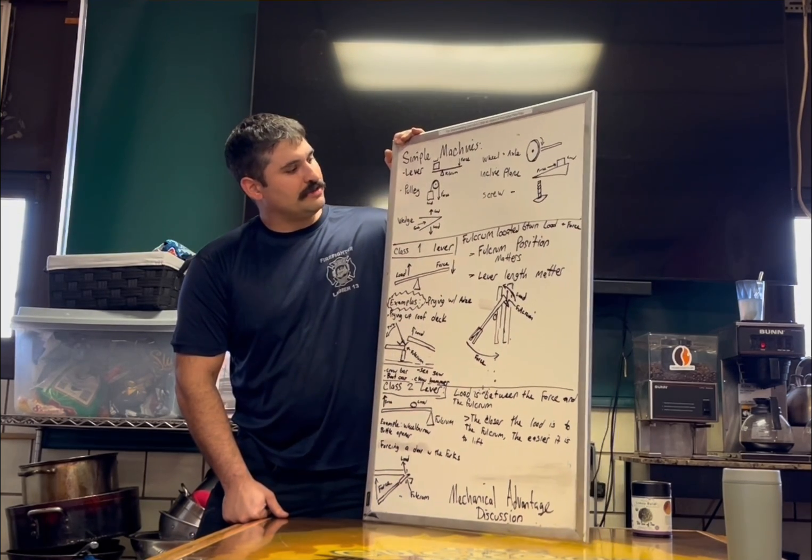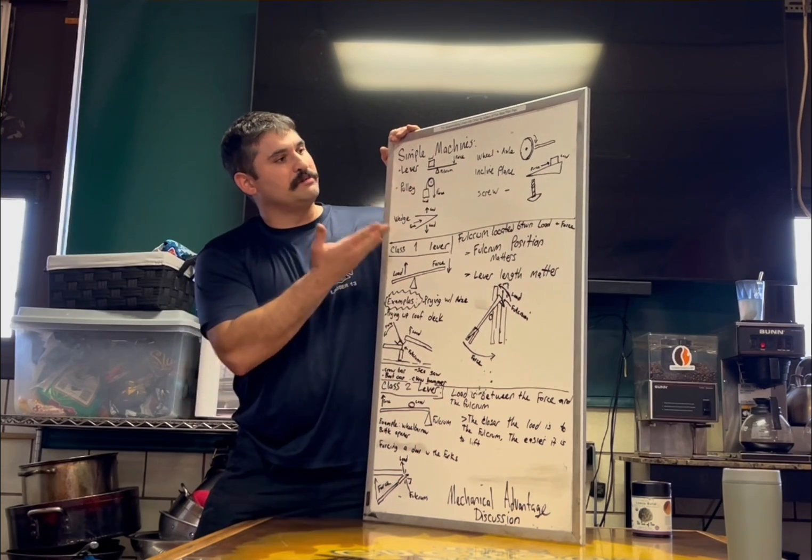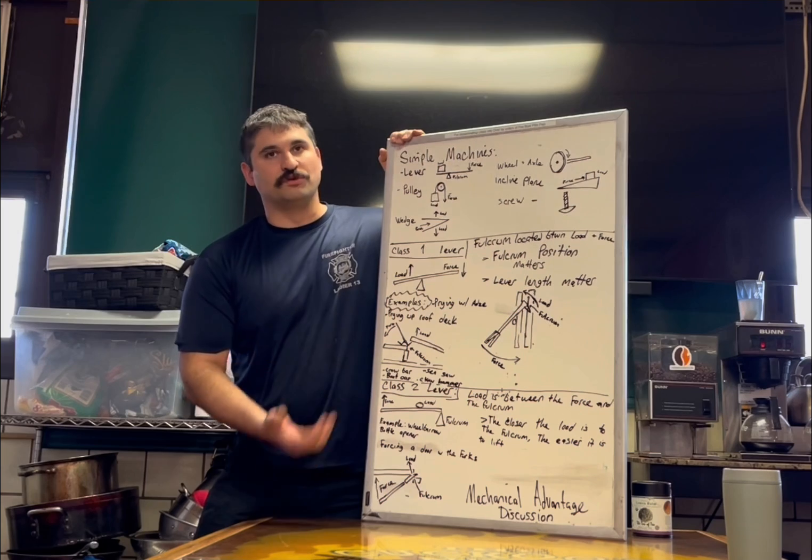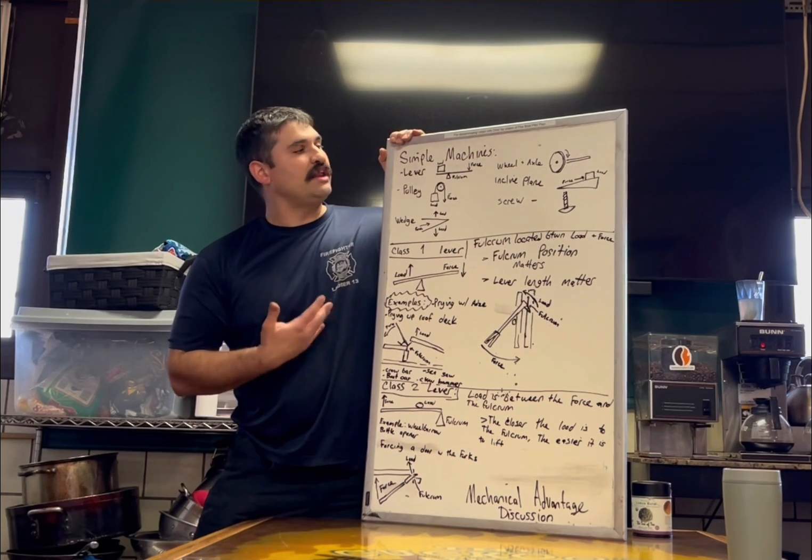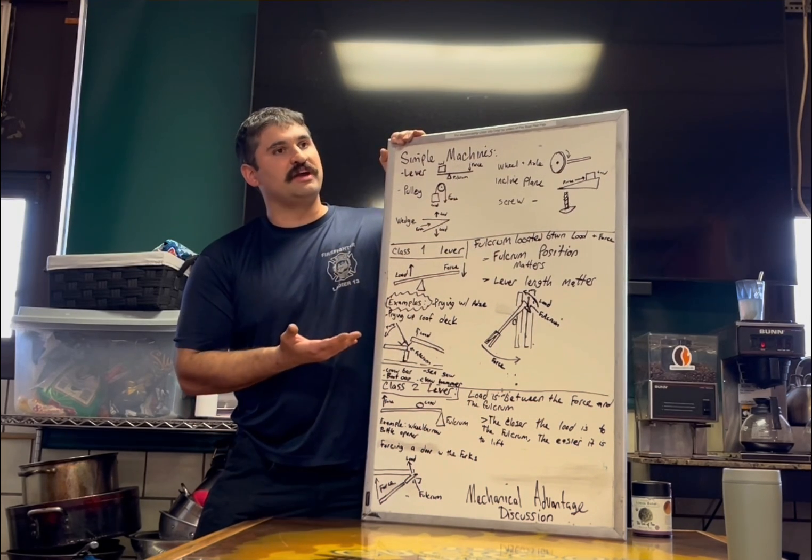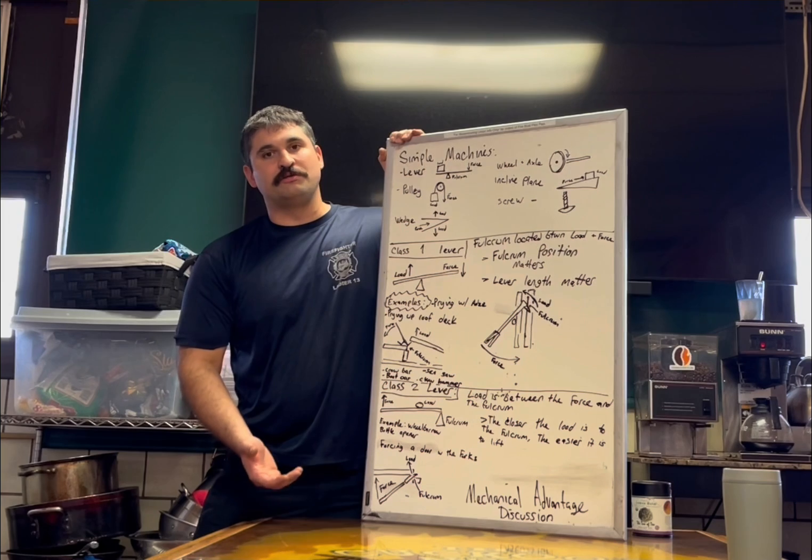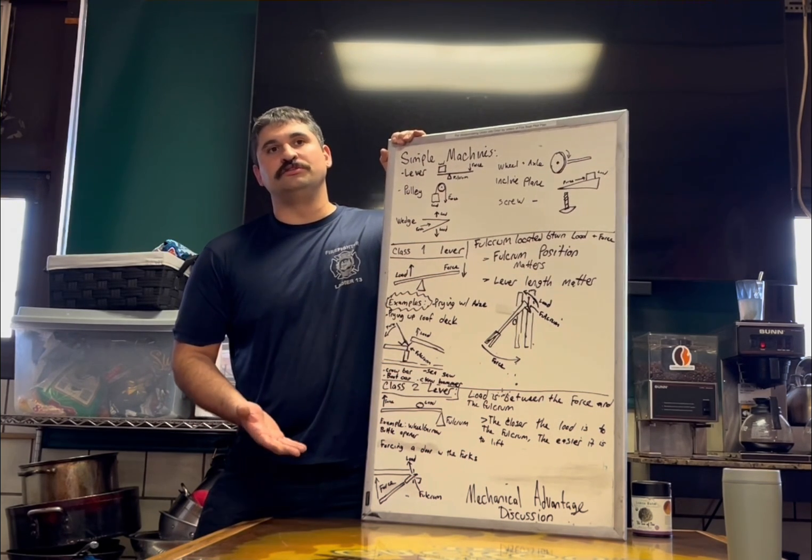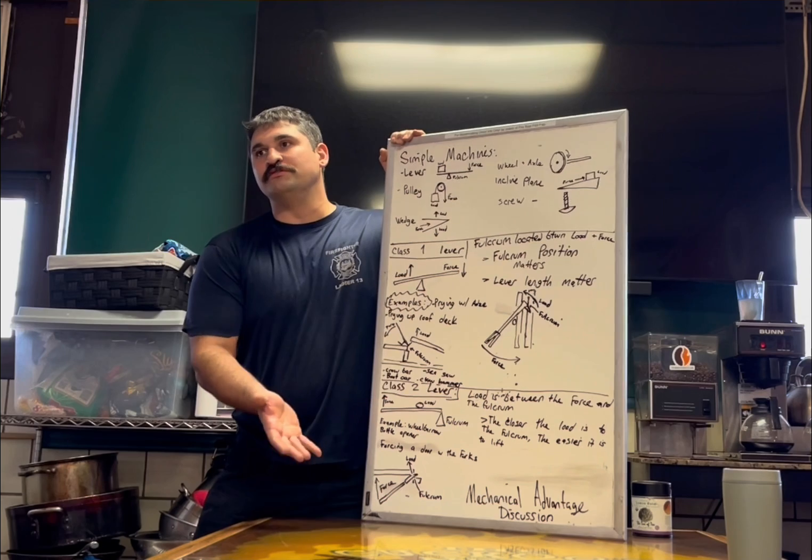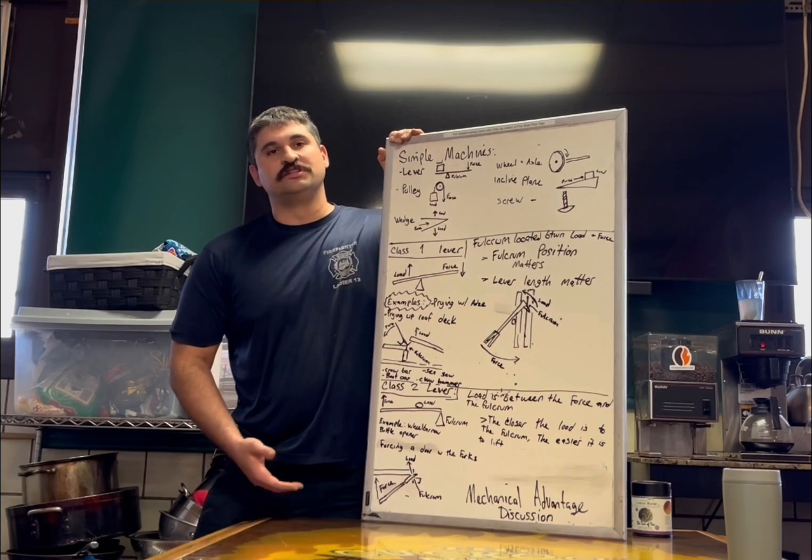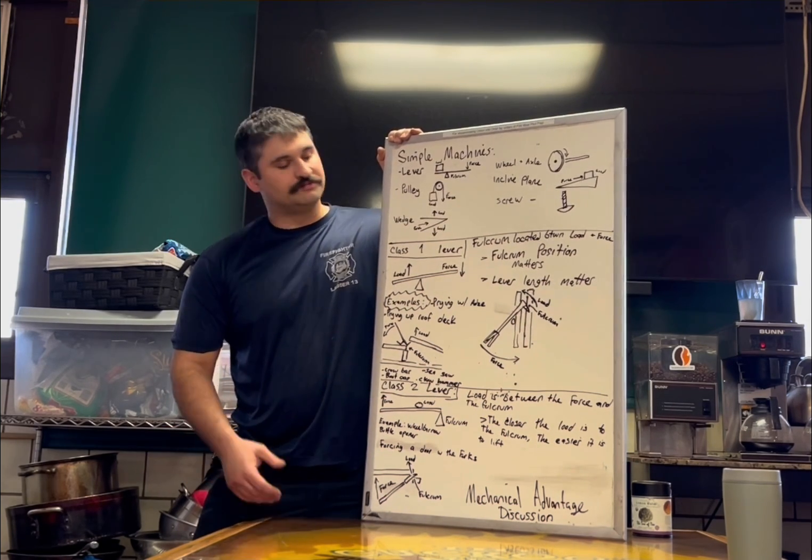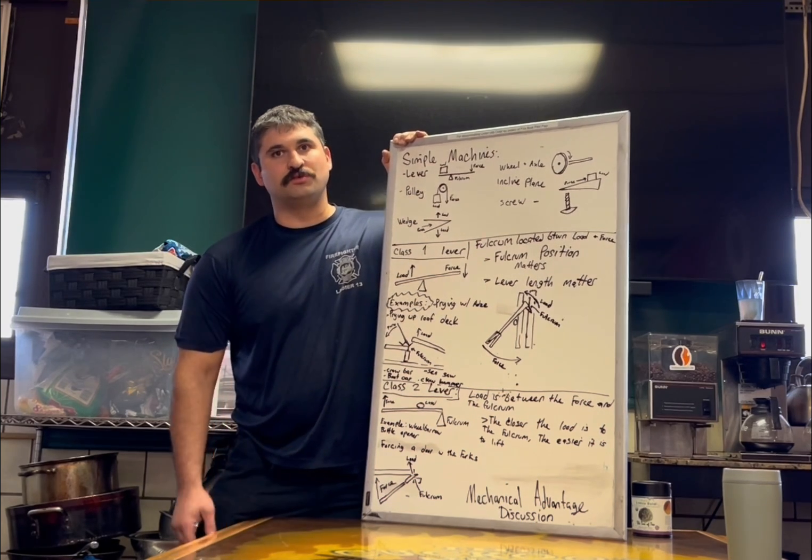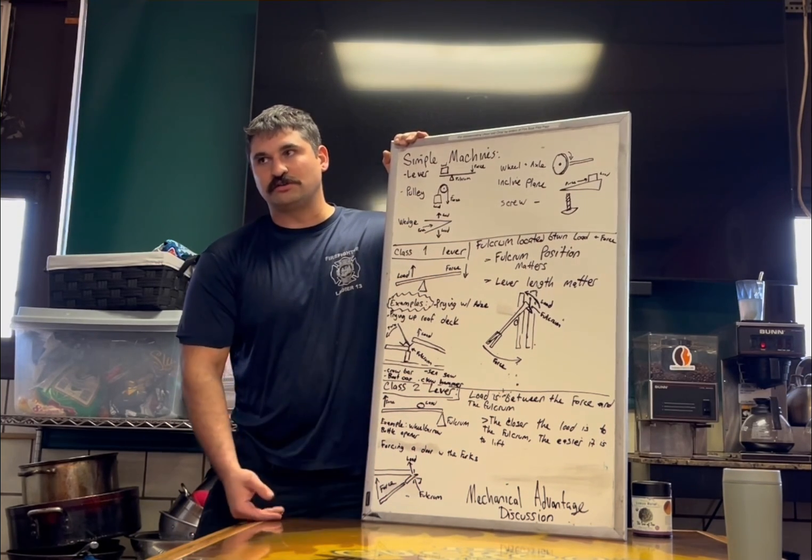On all these simple machines, we talk about how a load is moved by the force that we exert. Anything involving mechanical advantage with these simple machines is all about multiplying the load that you put in onto the thing that you want to move. So, multiplying forces to make your job easier. I just want to go over the two classes - well, there's three classes of levers. The two that the Halligan bar actually utilizes are class one and class two.